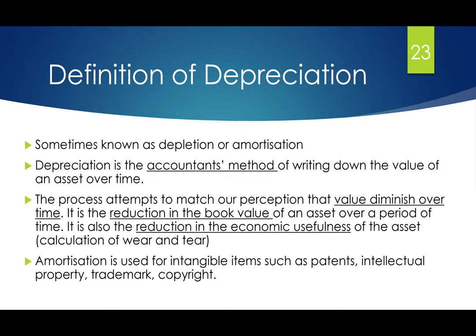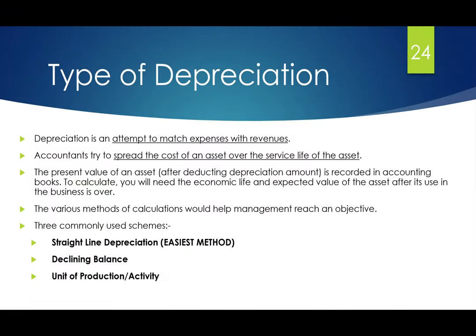Amortization is used for intangible items such as patents, intellectual property, trademarks, and copyright. Depreciation is really an attempt to match the expenses with the revenues. Accountants do this to spread the cost of an asset over the service life of the asset. The present value of an asset, after deducting the depreciation amount, is recorded in accounting books. You need to know the economic life of the asset and the expected value of that asset after you use it, or until the business is over. There are various methods of calculating depreciation to help management reach an objective.